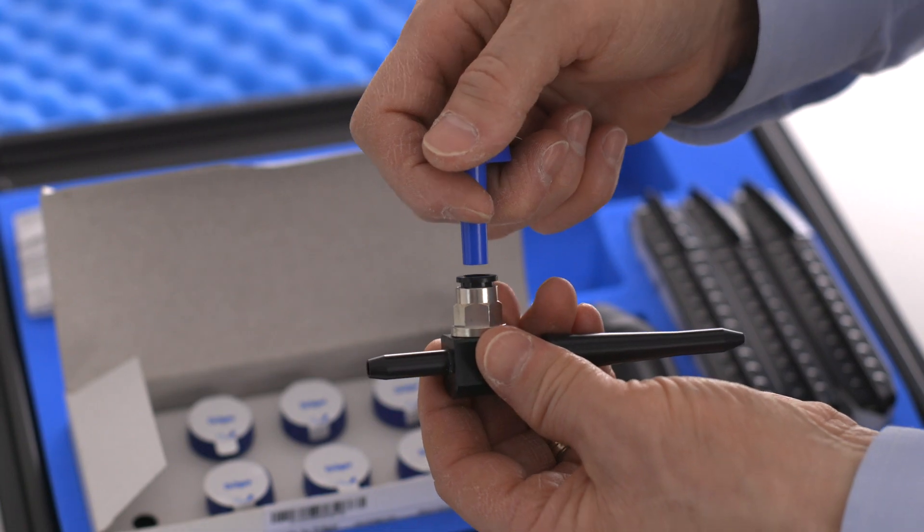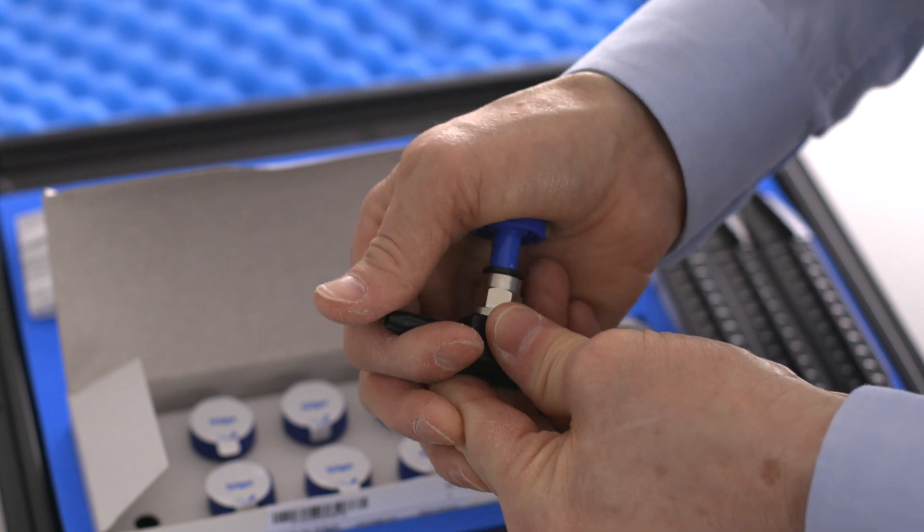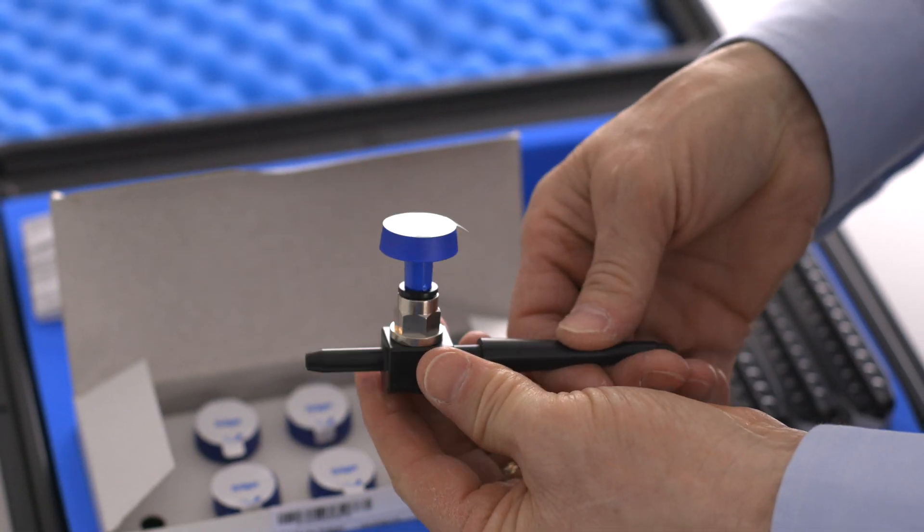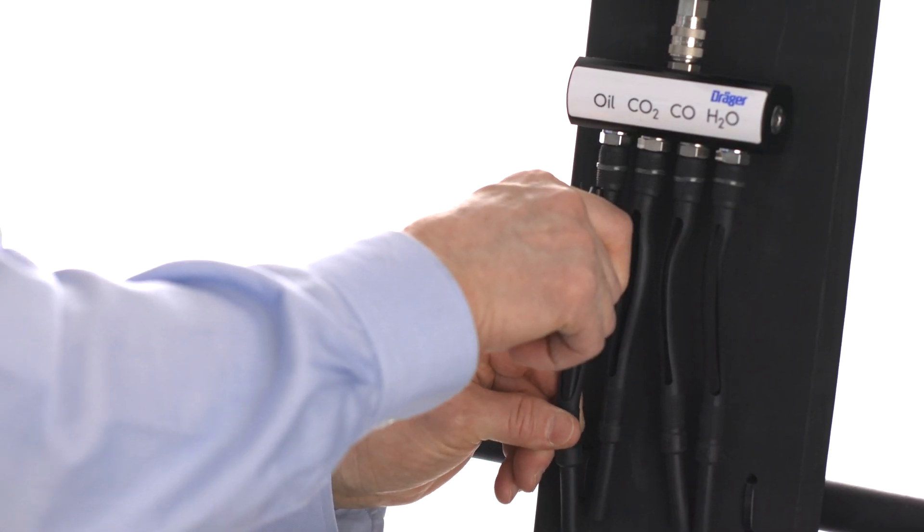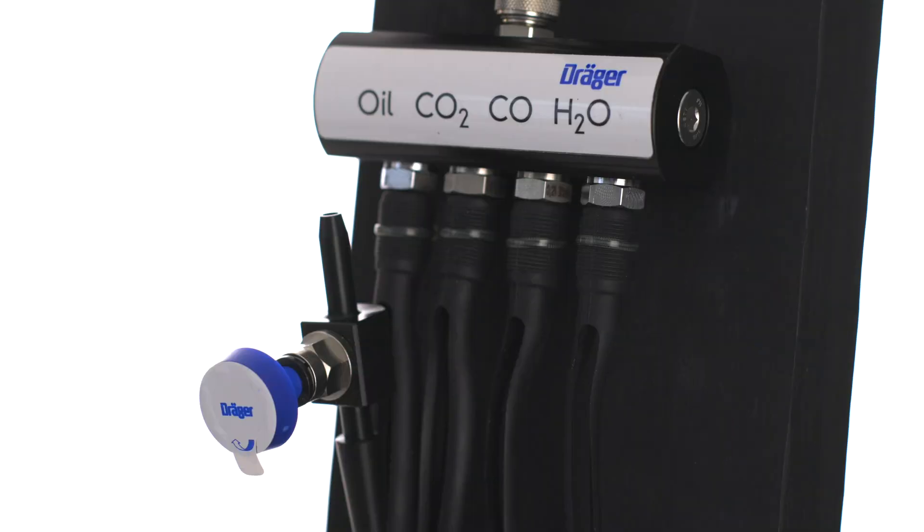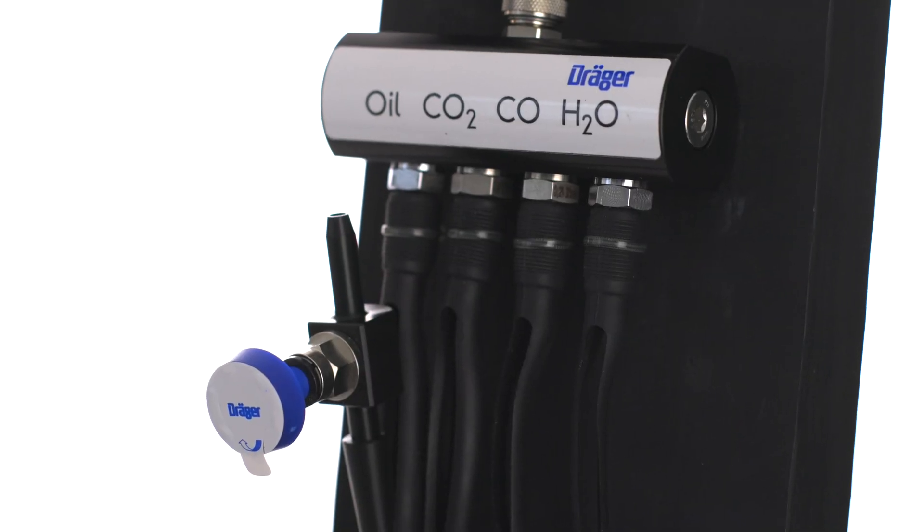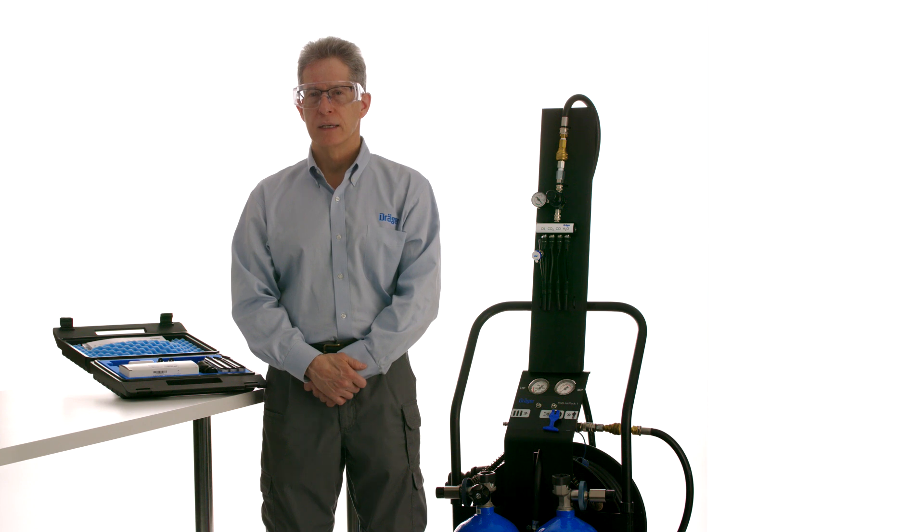Now we can start the pre-assembly of the impactor and the tubes. Attach an oil impactor to the impactor adapter. Insert the adapter into the bottom of the holder designated for oil. Leave the top part disconnected for now. Drager replaced the oil tube with the oil impactor some years ago because the impactor displays mineral oils and synthetic oils independent of the oil type or viscosity.